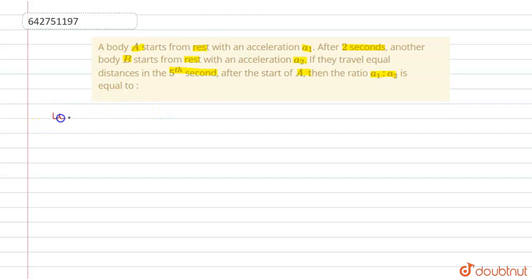First of all, write the given data. Initial speed is equal to zero, so u = 0. And if we talk about the distance covered in